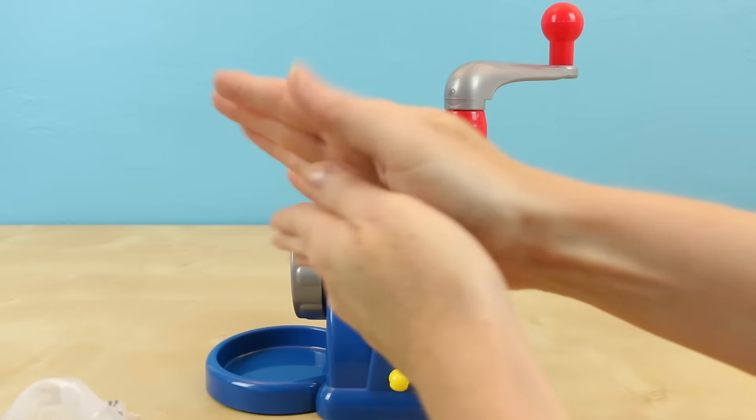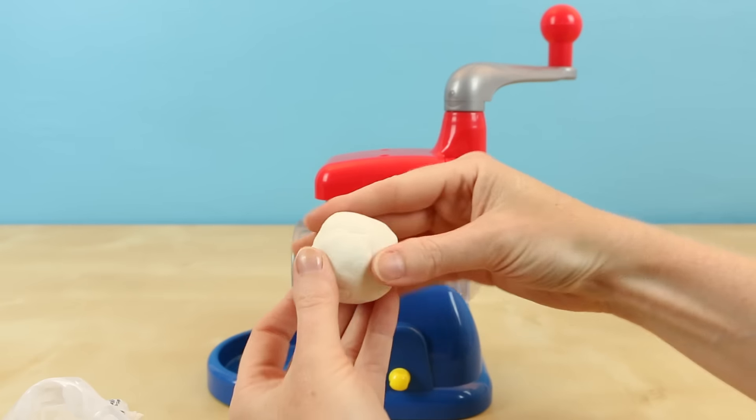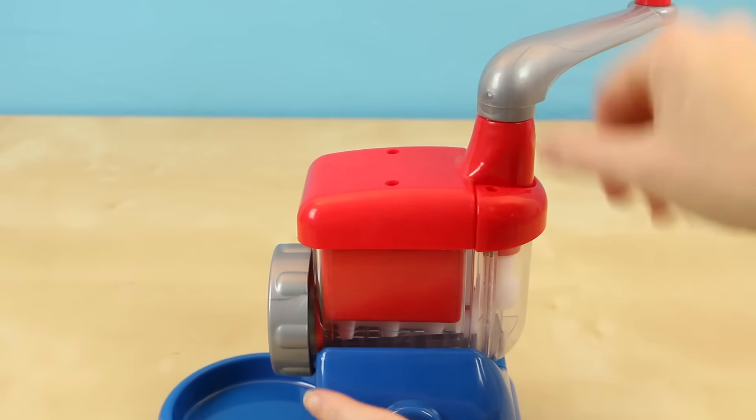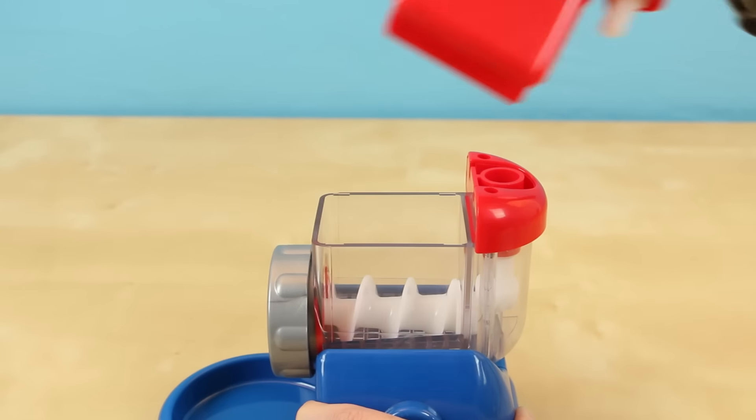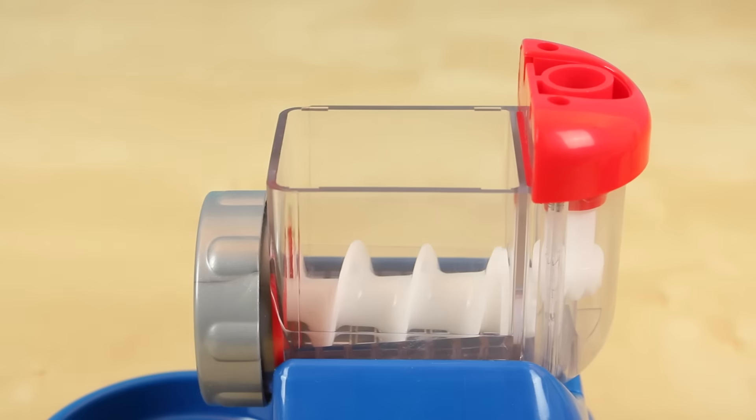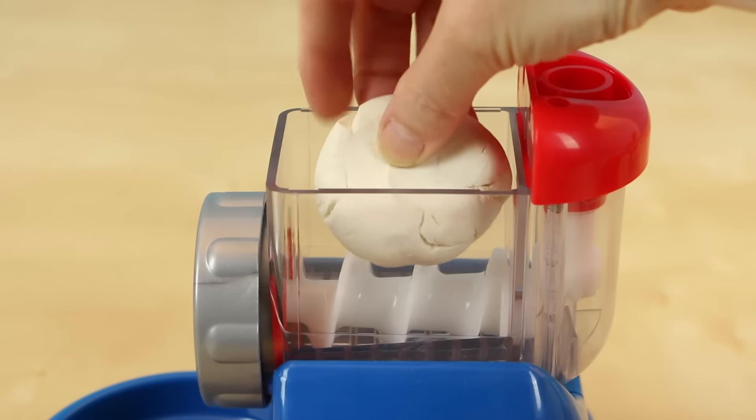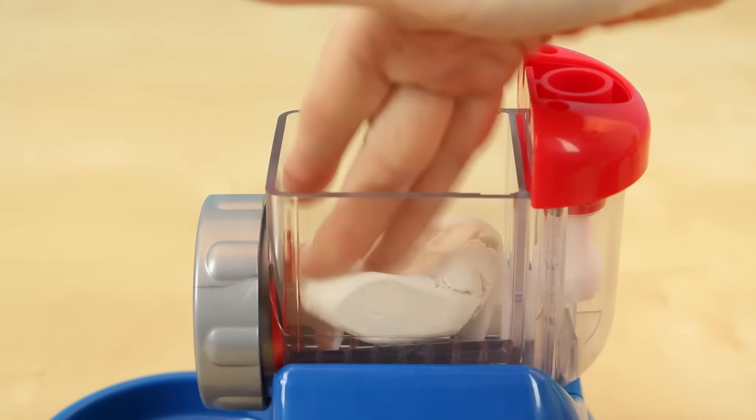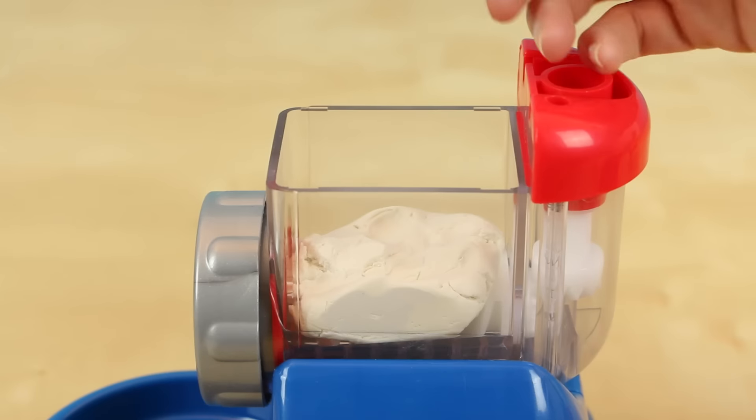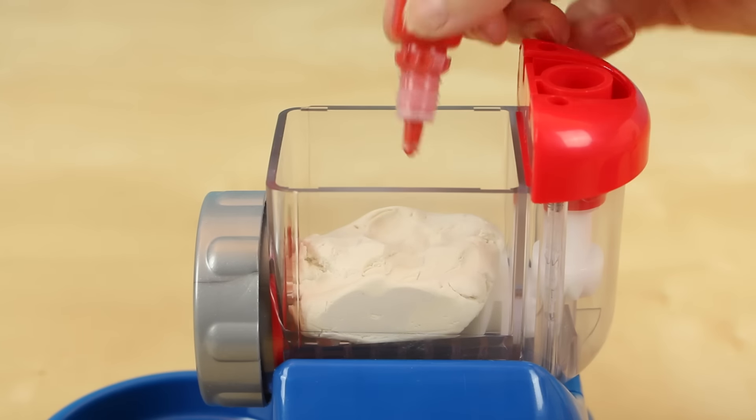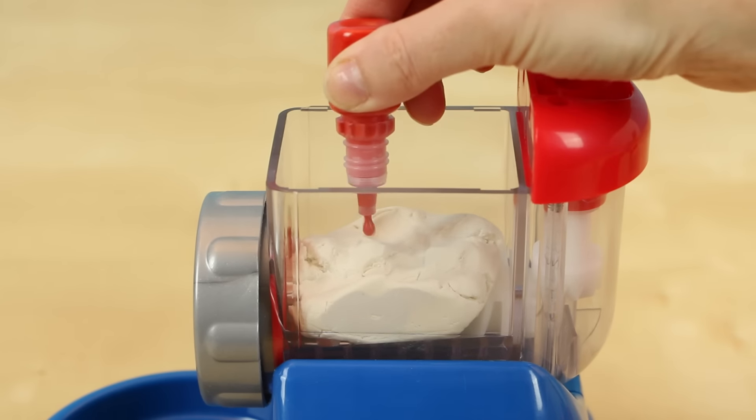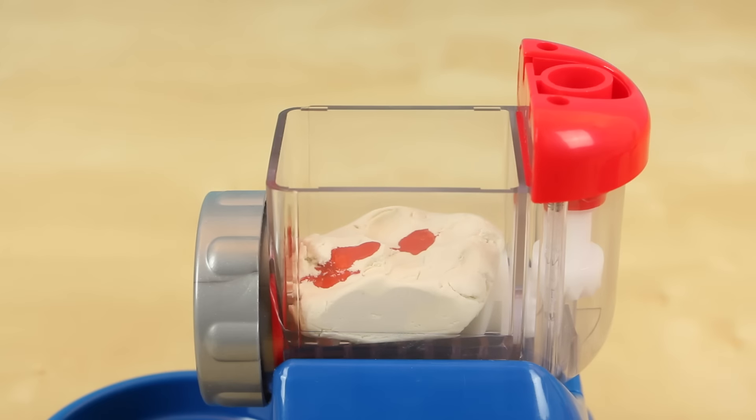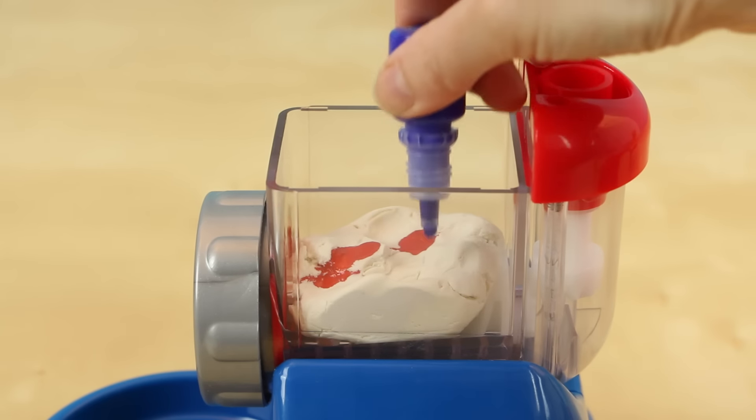There, this looks to be the right size. I'll just take the lid off the machine first. Put in my dough. I flattened it out just a little bit. Let's add a couple drops of the red color and a couple drops of the blue color.